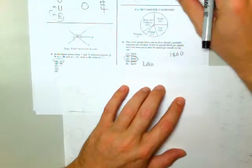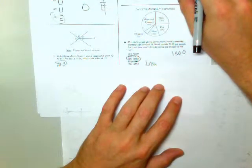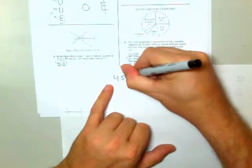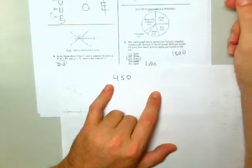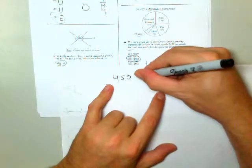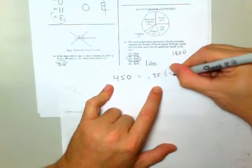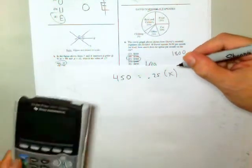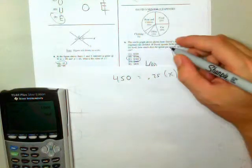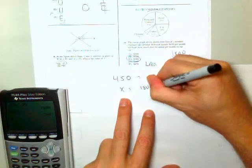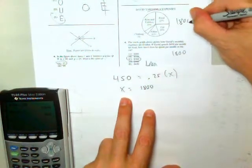The circle graph shows David's monthly expenses. If David spends $450 per month for food, how much does he spend per month on his car? Well, $450, I'm going to leave off per month, because everything's per month, monthly expenses. $450 is food, which represents 25%, or 0.25, of his monthly. So I'm going to divide 450 by 0.25, and I'm going to get X equals 1,800. So the whole month he spends $1,800.